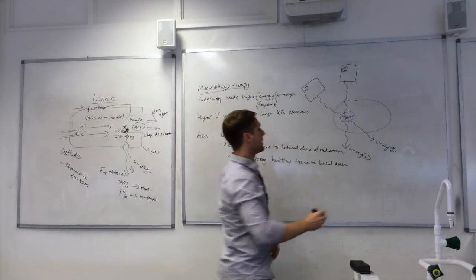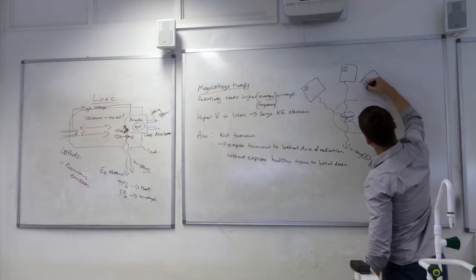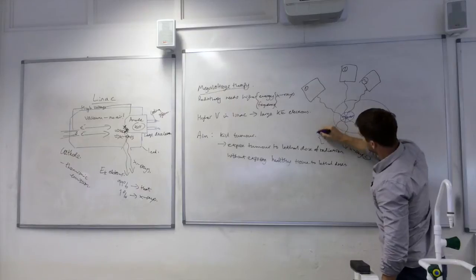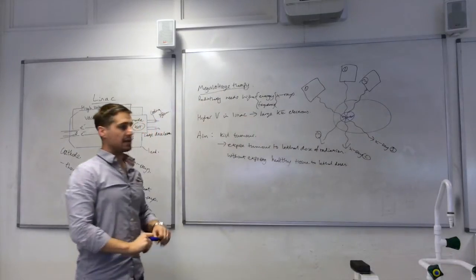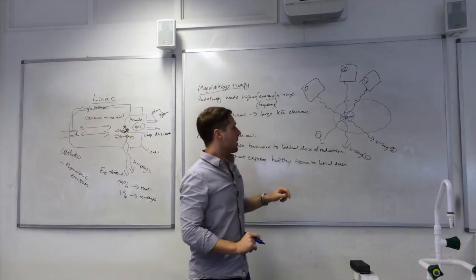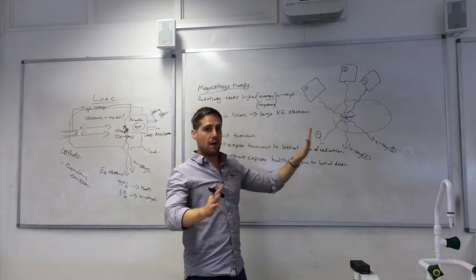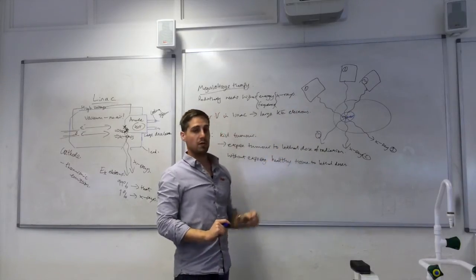And then we can rotate to a new position as well. There's beam three. Beam three targets the tumour again. So, all of the beams are intersecting the tumour. And the healthy tissue so far has only received one dose. But the tumour has received three.